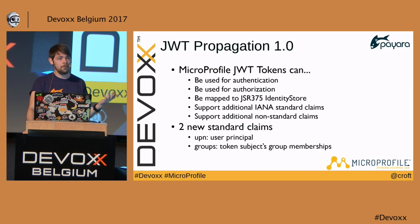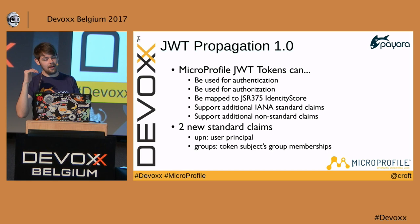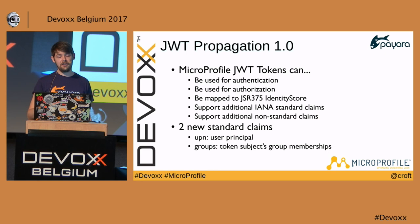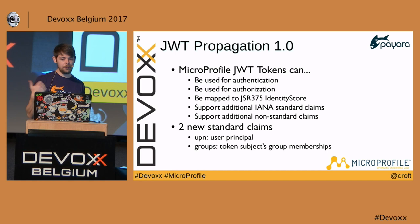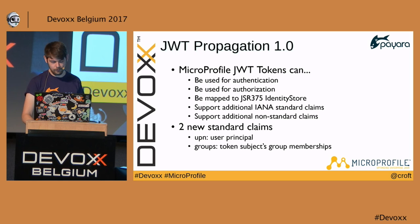MicroProfile JWT supports additional IANA standard claims and non-standard claims you specify yourself. Two new standard claims have been added: 'upn' (User Principal Name, similar to JSR-375's caller principal) and 'groups' (the subject's group memberships, e.g., admin or manager). A MicroProfile-compatible JWT token requires at minimum: type as JWT, algorithm as RS256, and 'kid' (the ID of the key used to secure the token).